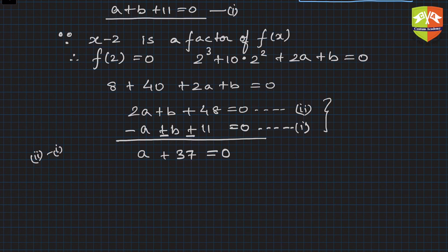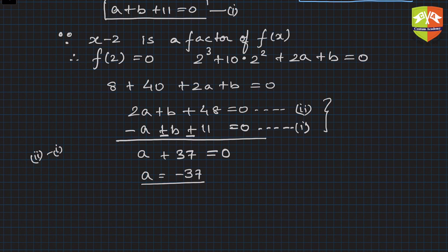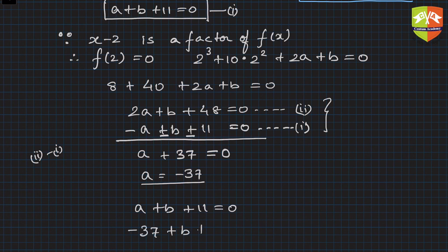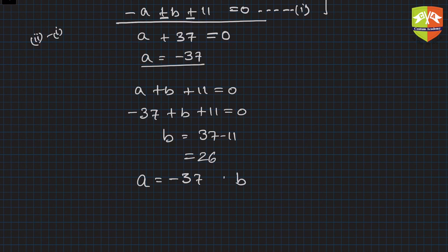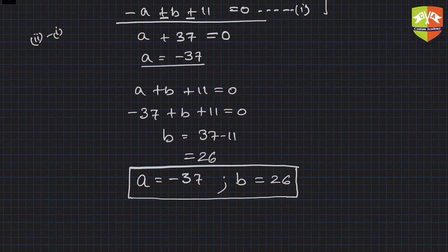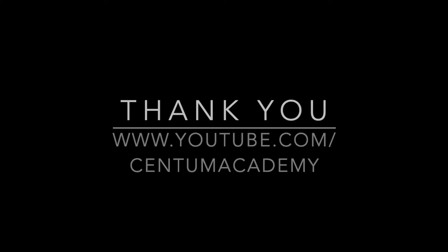From a plus 37 equals 0, we get a equals minus 37. To find b, substitute back into equation 1: minus 37 plus b plus 11 equals 0, so b equals 37 minus 11, which gives b equals 26. Hence a equals minus 37 and b equals 26. This is how factor theorem can be applied to find missing coefficients in a polynomial.